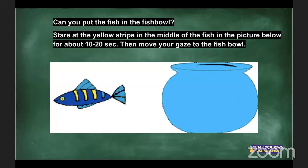This first activity is not for the exam, but it shows you how your eyes work and how your mind can be tricked. Stare at the middle yellow stripe of the fish for about 20 seconds, then turn your focus to the fishbowl and tell me in the chat what you saw.